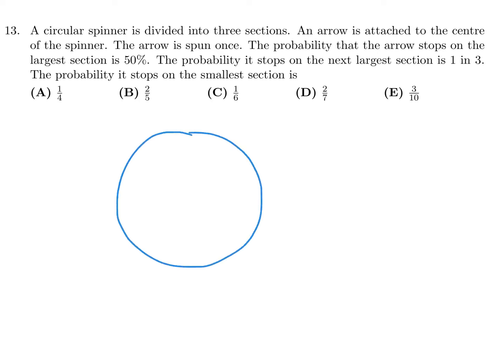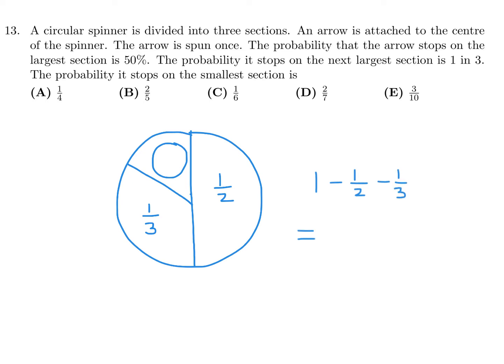One section is 50%, which is a half. The next section is 1 third. Since the whole circle equals 1, you subtract the half and the 1 third from 1, and you will get 1 sixth. So the answer to number 13 is C.